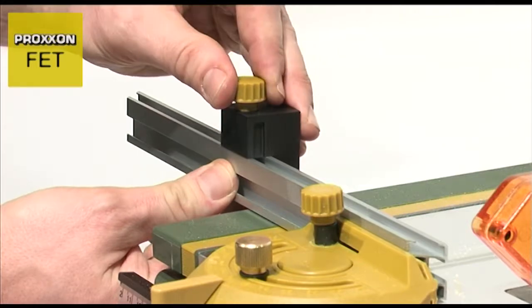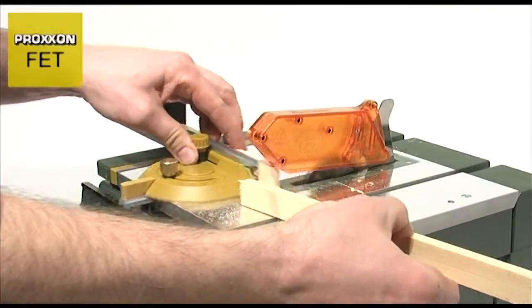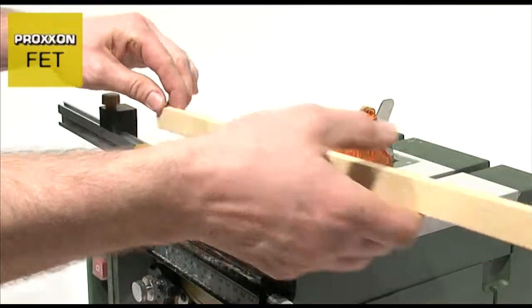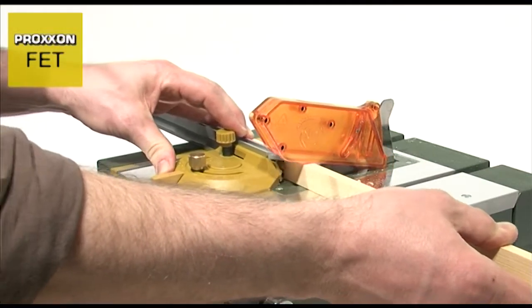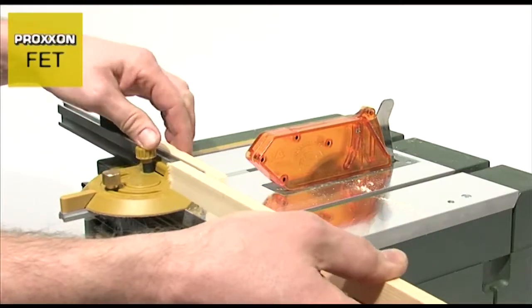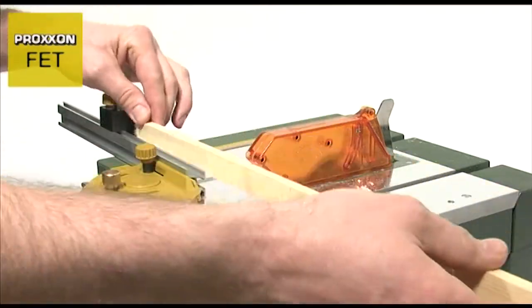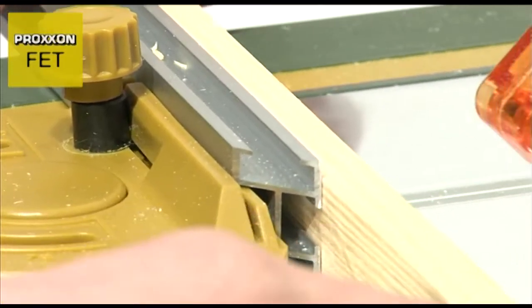And should you need to machine a larger quantity of parts of the same size with the same angle, the aluminium strip with adjustable limit stop is a very helpful aid. This is simply pushed onto the mitre fence and secured in the desired position.